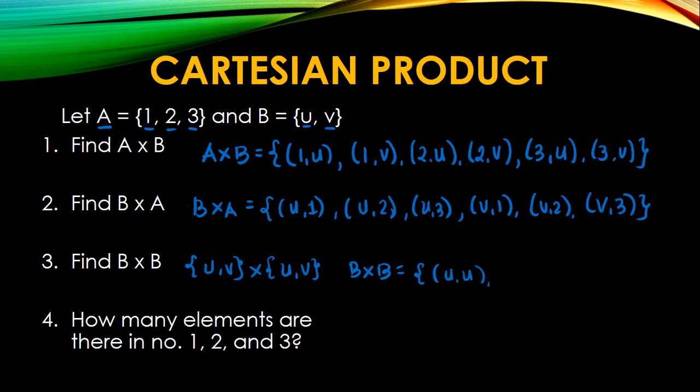Then we have U, V, comma. Then the second one, we have the third ordered pair, I mean is V, U. And we have the V, V. So that's it. That's how you solve the Cartesian product.